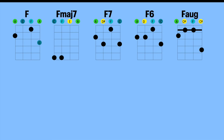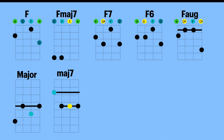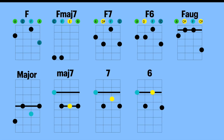As I pointed out before, the major F shape bar chord becomes a major seventh by dropping down two frets and making this shape like an open G major seventh. And we also make our seventh chord the same way, like an open G7. Same with the sixth — they're all like the open G shapes, two frets down from the major F shape. And the augmented shape is like the C shape augmented, one fret up.